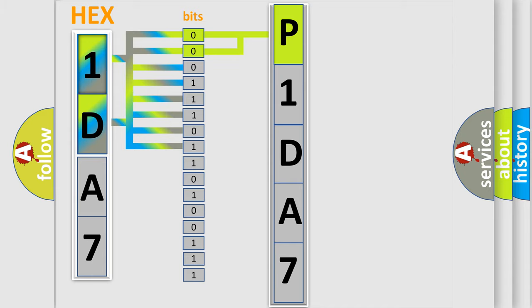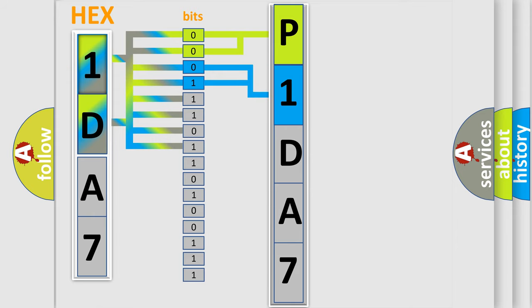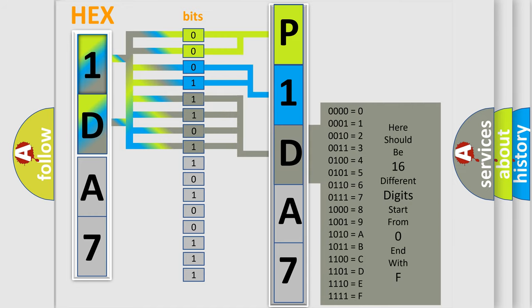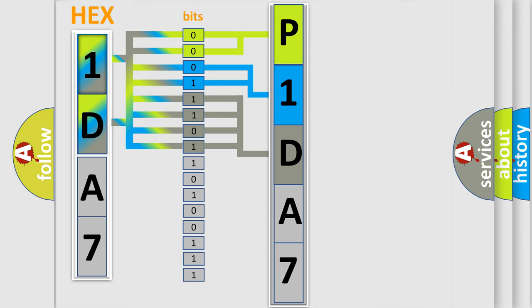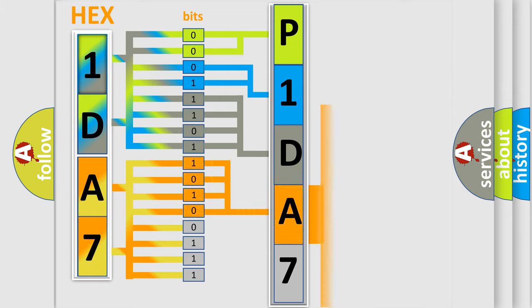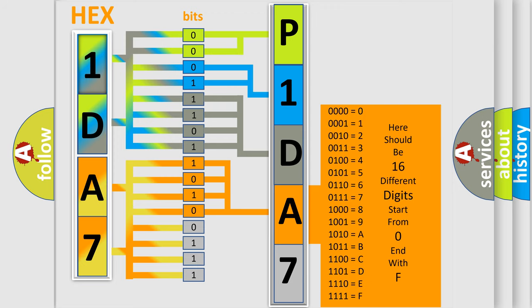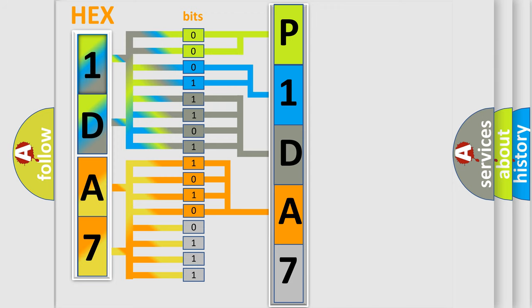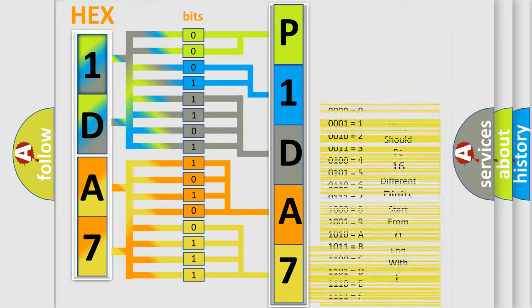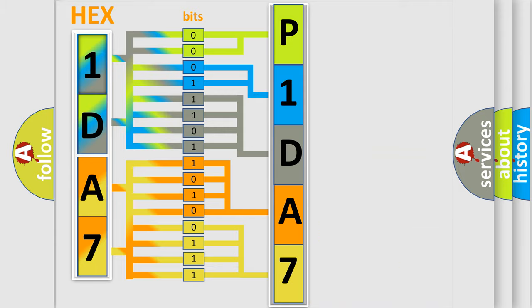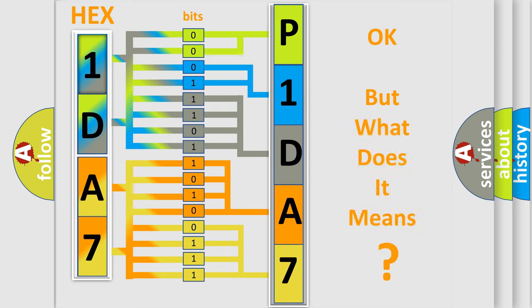The next two bits determine the second character. The last bits of the first byte define the third character of the code. The second byte is composed of a combination of eight bits. The first four bits determine the fourth character, and the combination of the last four bits defines the fifth character. A single byte conceals 256 possible combinations. We now know in what way the diagnostic tool translates the received information into a more comprehensible format. The number itself does not make sense to us if we cannot assign information about what it actually expresses.